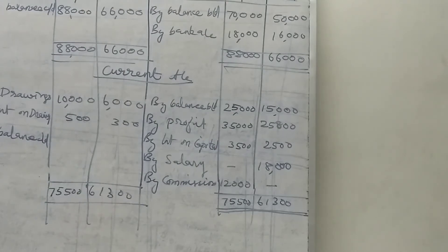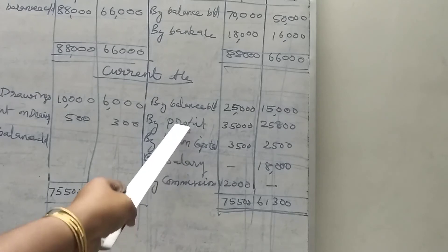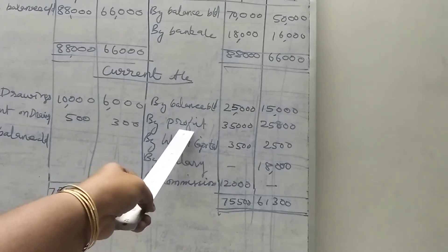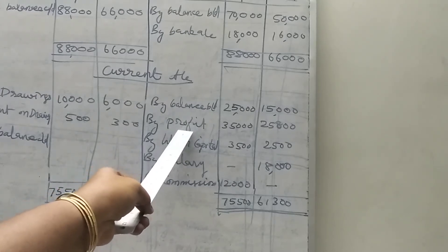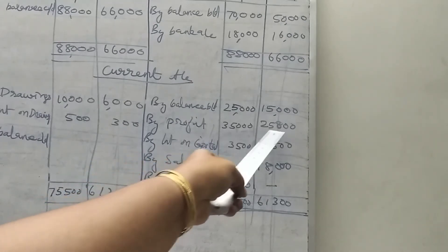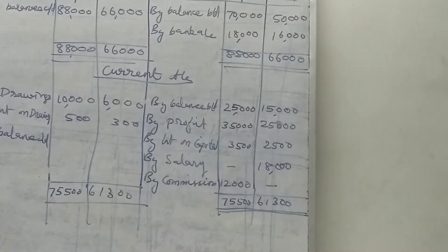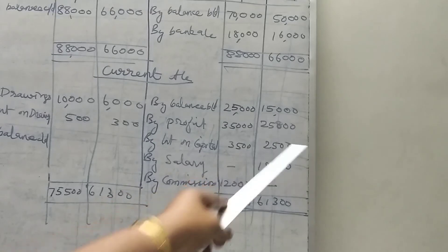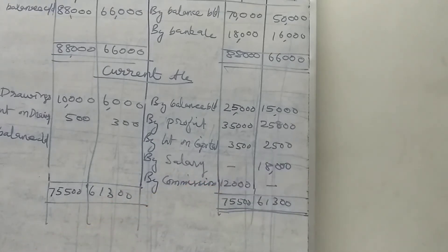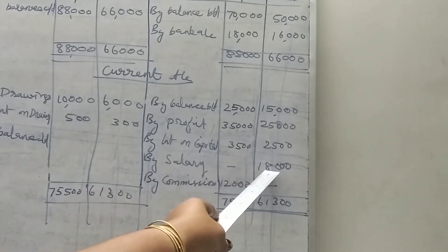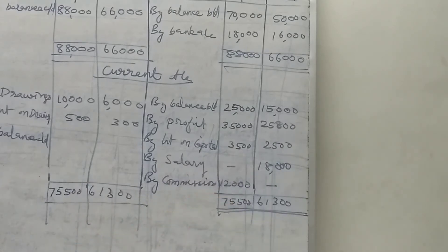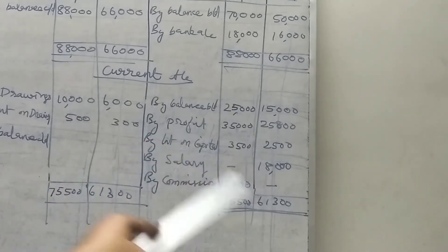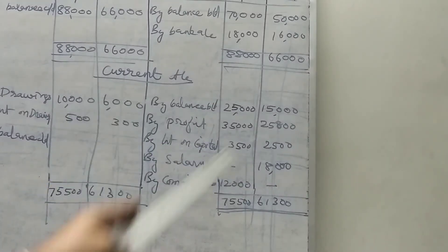Share of profit: Ruben 35,000 and Derry 25,000. Profit coming from the company goes to the credit side. Then interest on capital — that is also income: 3,500 for Ruben and 2,500 for Derry. Then salary, which is income for the partner — given only to Derry: 18,000. Commission given only to Ruben: 12,000. We enter all these items on the credit side.